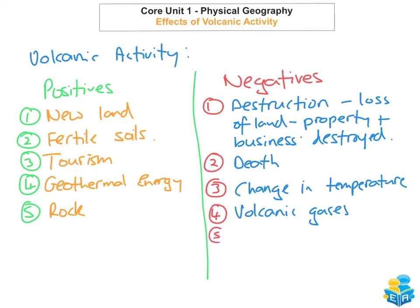The fifth negative impact of volcanoes is the lahars that can be created, which produce lots of mud flows. An example of this would be in Nevada del Ruiz in 1985, where there were huge mud flows created because of the lahars, and this killed thousands of people.